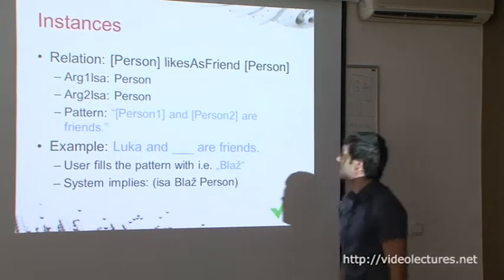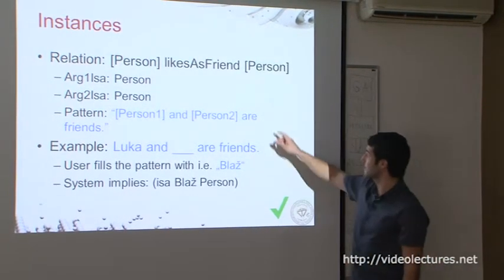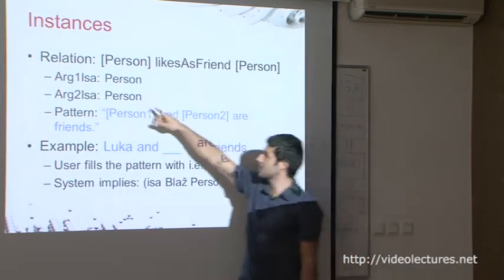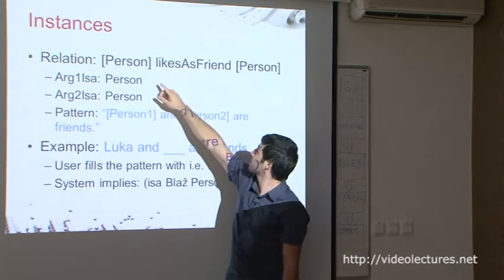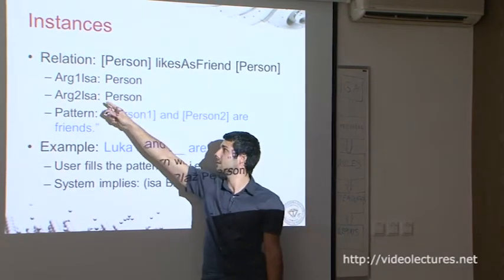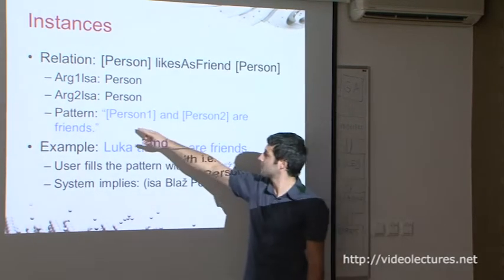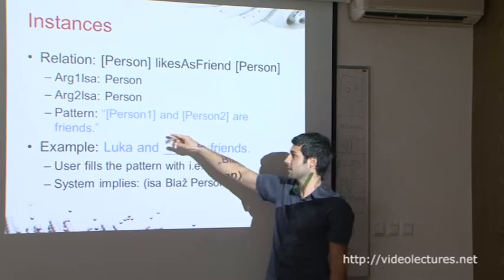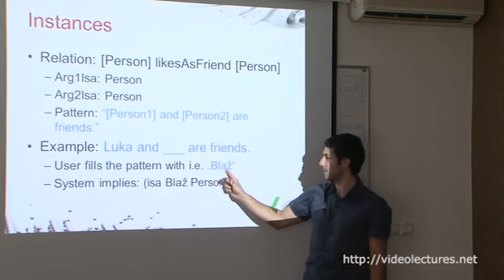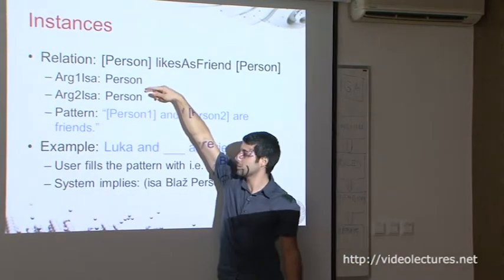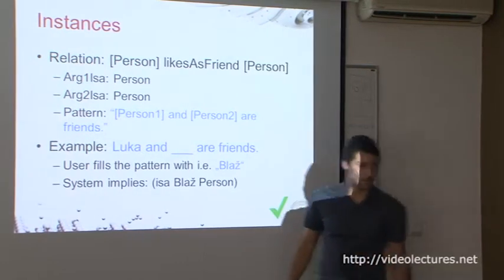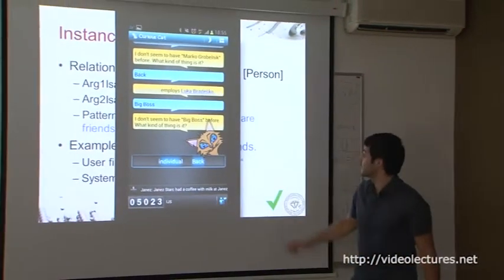When the system asks a question — done with a pattern — and you answer, say, with 'Blush.' Then because of those assertions, because it knows this should be a person, it already knows this is an instance of person. This is an example: it asked me 'who employs you?' and I added somebody. Then just in case it was checking whether it's really an individual. So now he will become an instance of a person class. And then another level is classes — here is an example ontology for food and drink.